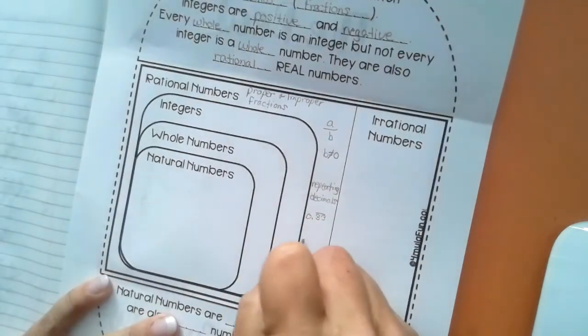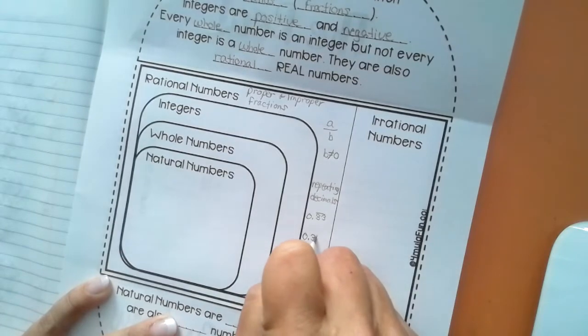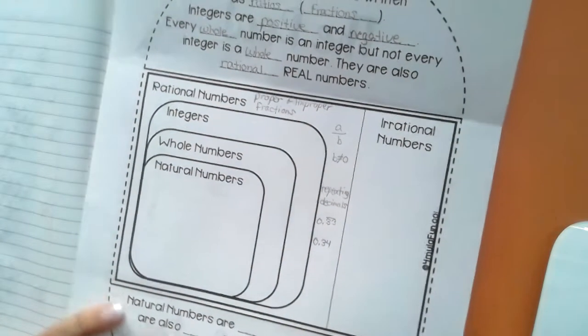And then decimals that stop. So this is a rational number because it stops.